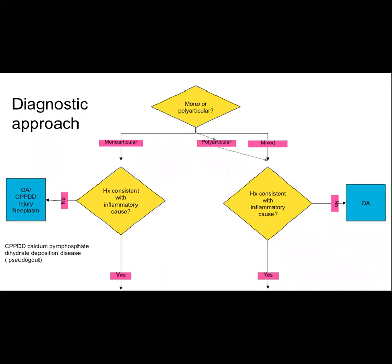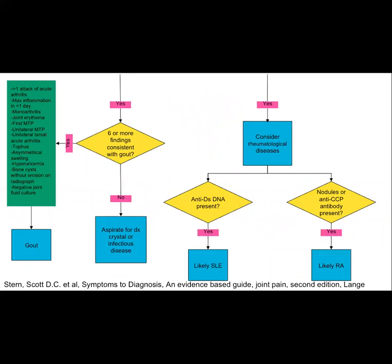After excluding periarticular causes and looking at symmetric acute presentation, we narrow down differential diagnosis by checking if the history is consistent with inflammatory cause or not. If not consistent with inflammatory causes, it might be OA, injury, neoplasm or pseudogout. If the history is consistent with inflammatory cause and affecting only one joint, we need to look for the findings listed in this green box. If your patient has six or more of these findings, give a diagnosis of gout. If not, go for joint aspiration. If the history is consistent with inflammatory cause and polyarticular, investigate further for SLE or RA.